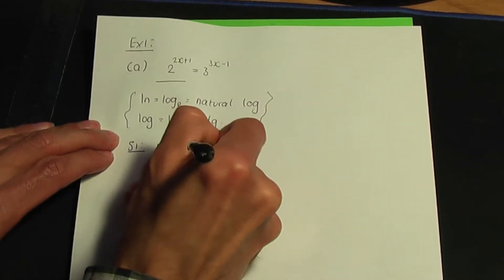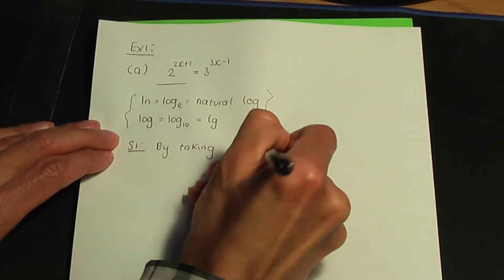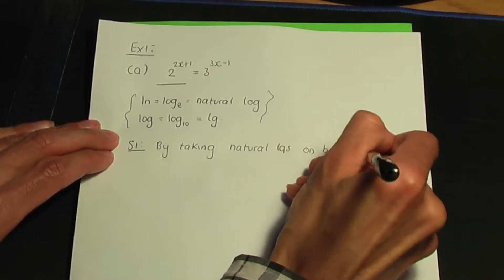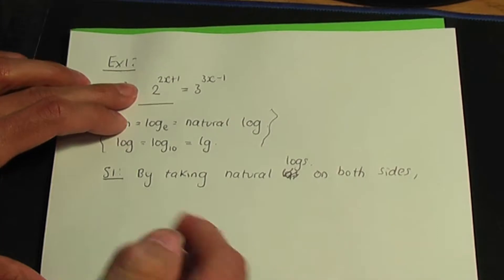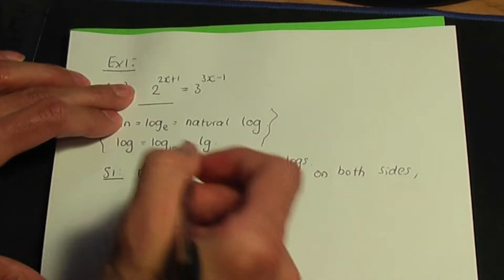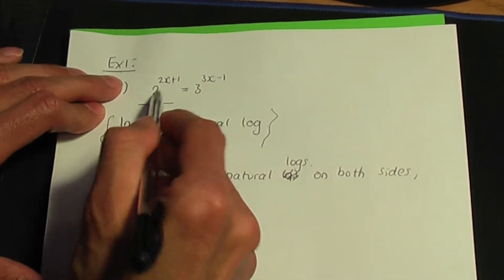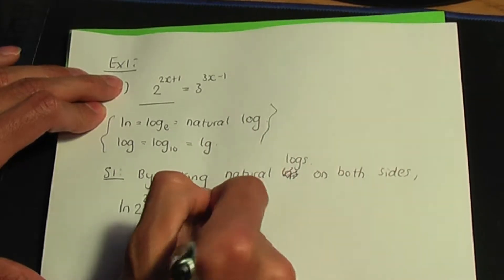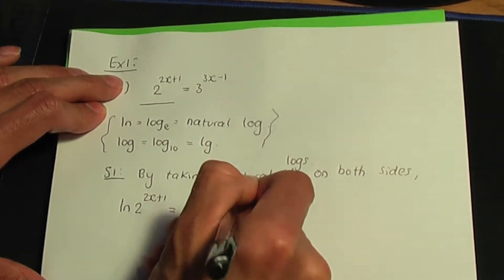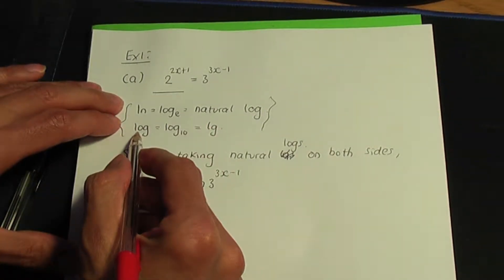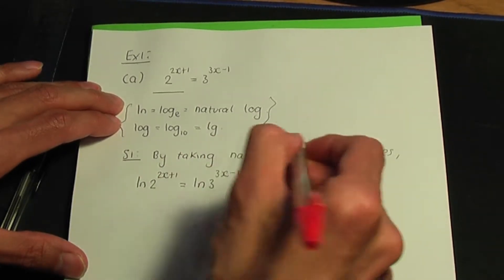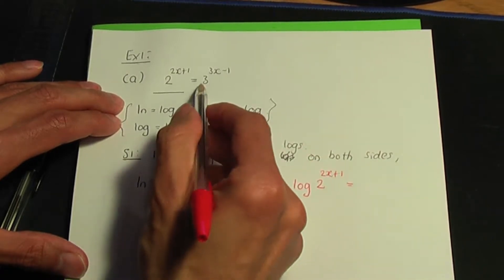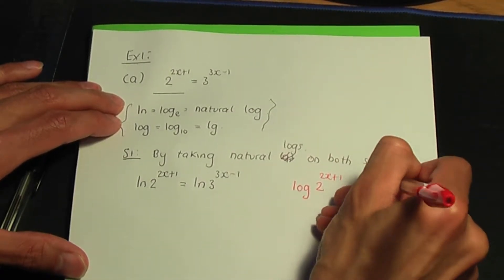Step number one: taking natural logarithms on both sides. I need to write ln in front of the left-hand term, which is 2 to the power 2x plus 1, and also write ln in front of the right-hand term, which is 3 to the power 3x minus 1. If you wanted to take log to the base 10 on both sides, the approach is similar — write log in front of each term.